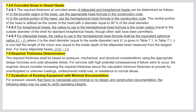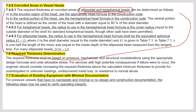For corroded areas in vessel heads, the required thickness of corroded areas in ellipsoidal and torispherical heads will be covered as open-book calculations in the next slide. How to calculate the required thickness for ellipsoidal heads, hemispherical heads, and torispherical heads is a must question — you will find three to four questions, both open-book and close-book, on corroded areas in vessel heads.